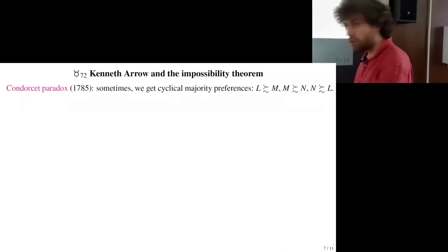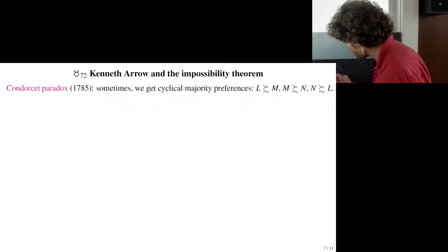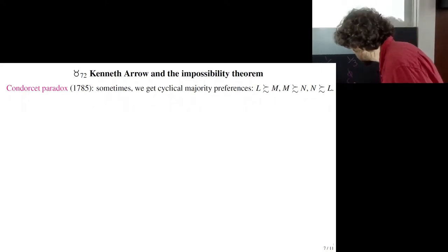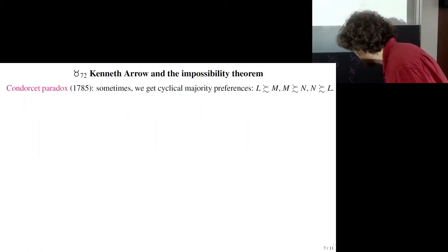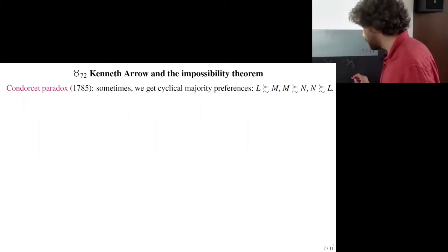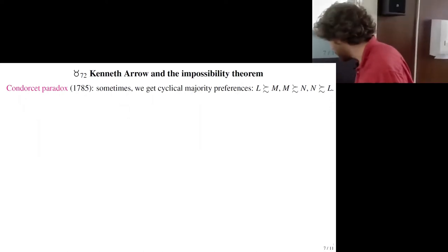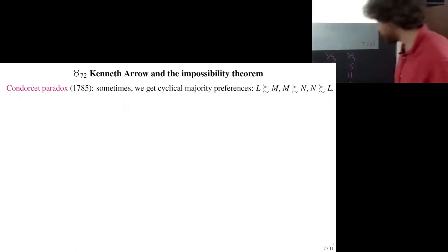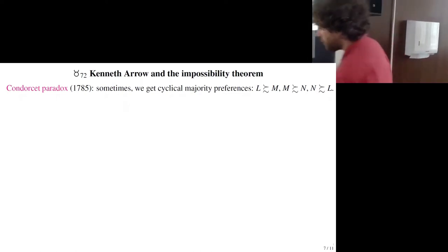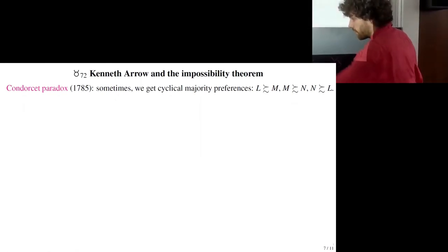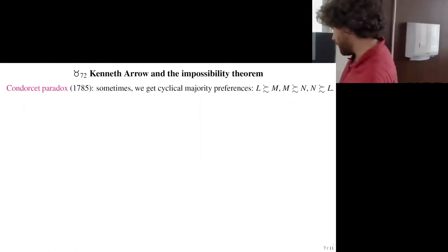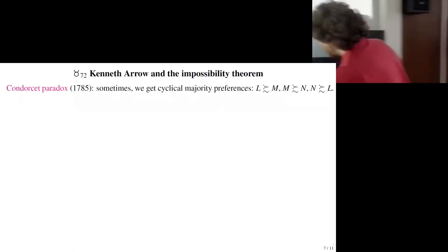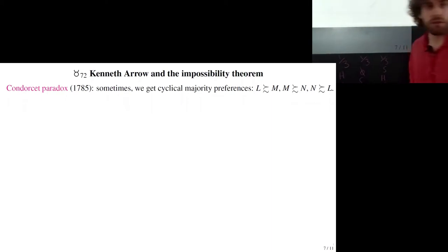Another third prefers nothing, then stadium, then hospital. The last third prefers stadium, then hospital, then nothing. You can see that two-thirds prefer the stadium to the hospital — a majority. Two-thirds prefer the hospital to nothing — a majority. And two-thirds prefer nothing to the stadium — also a majority. This illustrates the cycle perfectly.